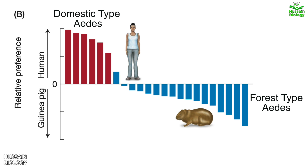This shows us how gene expression has evolved in the same species residing in different habitats, with just a few alterations at the gene level.